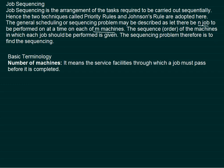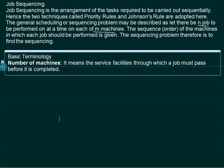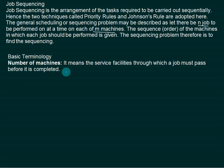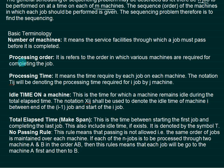Basic terms used in sequencing: the number of machines refers to the service facilities through which a job must pass before it gets completed. Processing order refers to the order in which the various machines are required for completing the job as per their processing time. Processing time is the time required by each job on each machine. Idle time on each machine should be as low as possible — it is the time the machine remains idle during the total elapsed time.